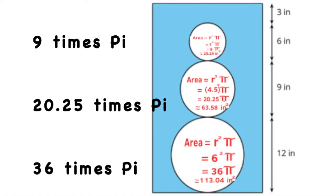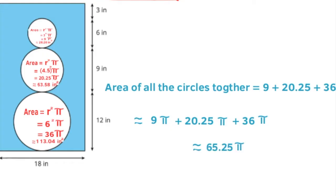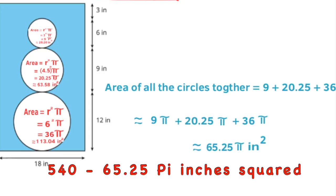The area of the smallest circle is 9 pi, the medium circle is 20.25 pi, and the area of the larger circle is 36 pi. Adding them up, their total area is approximately 65.25 pi inches squared. Subtracting this from the area of the blue rectangle, the area of the shaded region is 540 minus 65.25 pi inches squared.